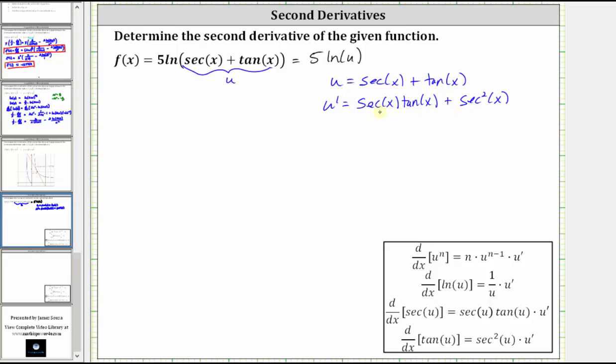Notice how u prime does factor, because we have a common factor of secant x. So let's also write u prime in factored form, which is secant x times the quantity tangent x plus secant x.